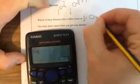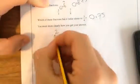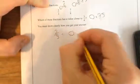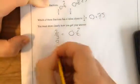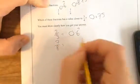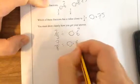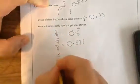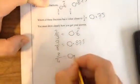Now, 3 quarters is 0.75. OK. So, I'm just going to write this out. 2 thirds equals 0.6 reoccurring. 7 eighths equals 0.875. And 3 quarters equals 0.75.